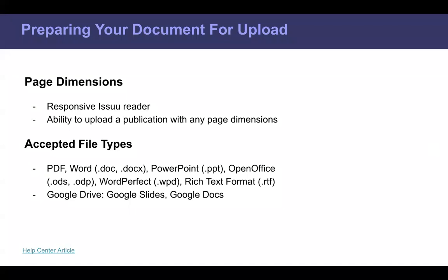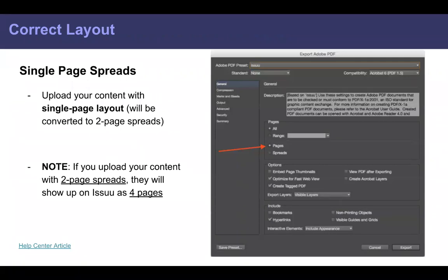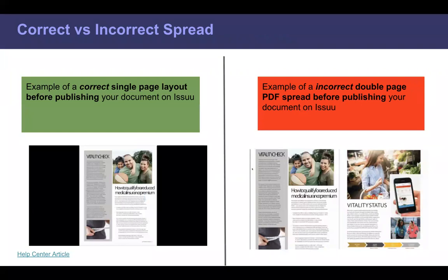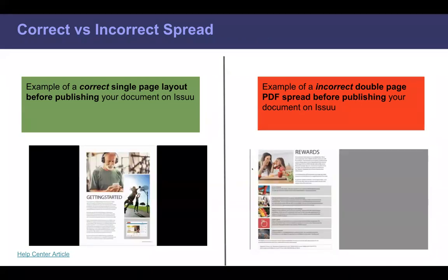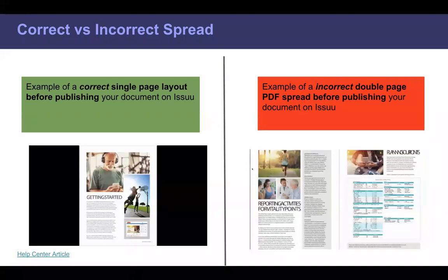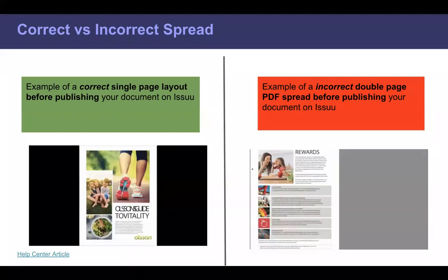Some tips for preparing your document for upload: here are all the accepted file types. The Issuu reader is responsive, so it adapts to various page sizes — square format, different ratios, presentation format, magazine-size pages. You can read the content on desktop as well as mobile screens. One important thing: upload your publication in single-page layout. Do not upload it as double-page spreads, because that will result in four pages.